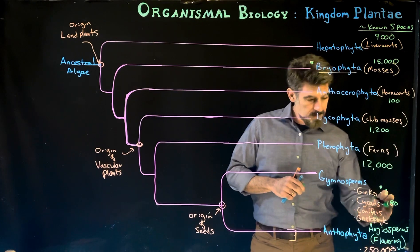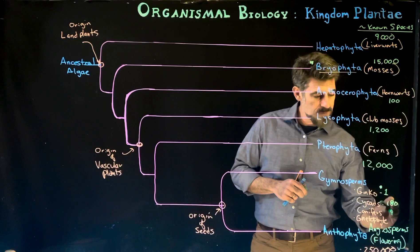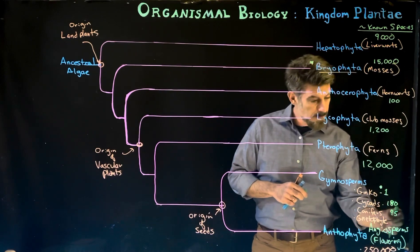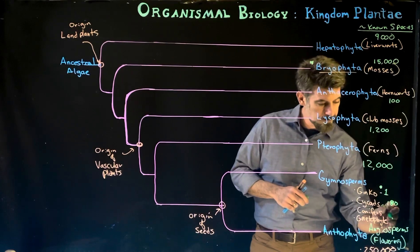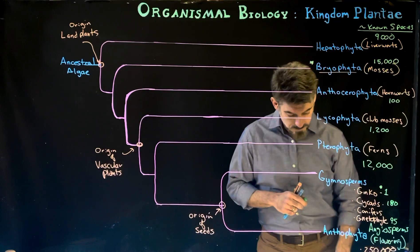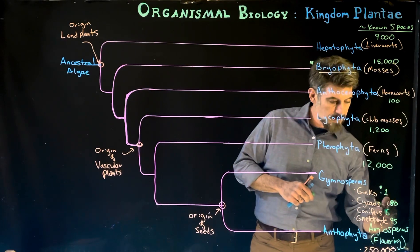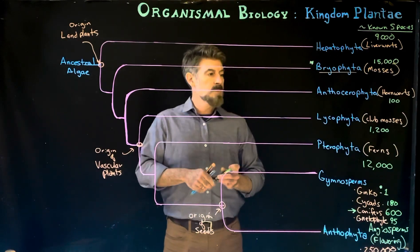The gnetophyta, we have, my numbers here, I think it's about 95 species known. And the conifers are the bigger group with about 600 species. And so that'll be the one we focus in on.